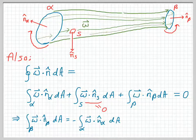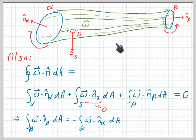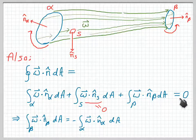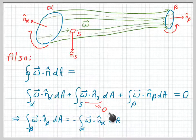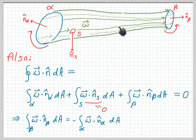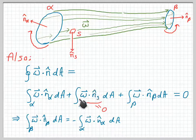We can break that integral up into three parts: an integral over cross section alpha, an integral over the side wall, and an integral over cross section beta — and that whole sum must add up to zero. The integral over the side wall is also zero, because by definition the side wall is made up of vortex filaments, so the vorticity field omega always lies within the side wall, making it perpendicular to the outward pointing unit normal. Therefore their dot product is zero, and integrating over the side wall area also gives zero.